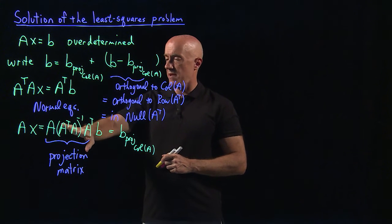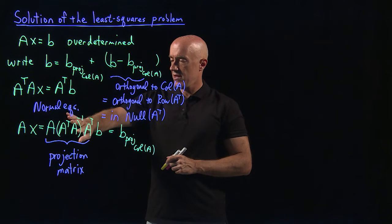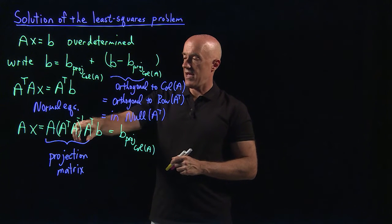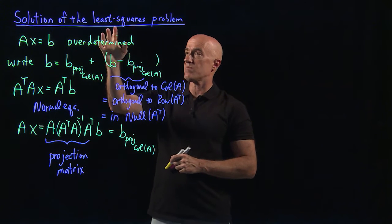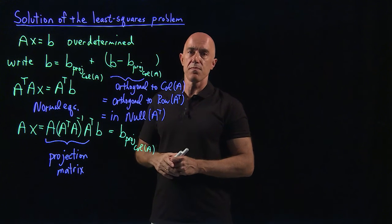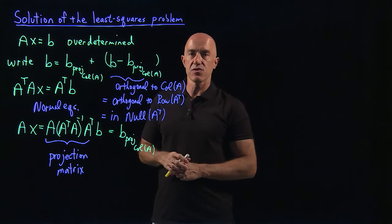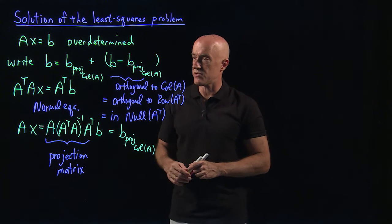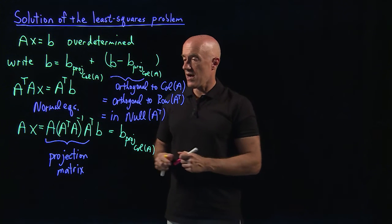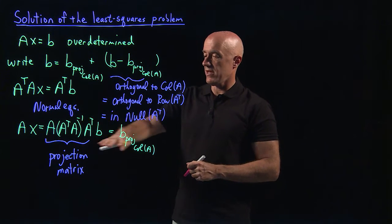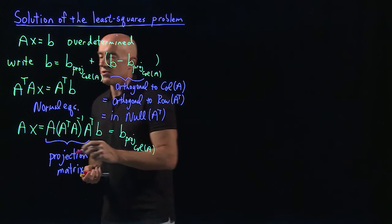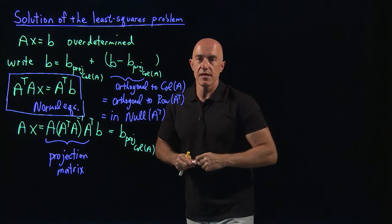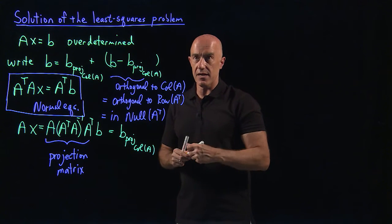Note that A is not an invertible matrix — it's not even a square matrix. In the least squares problem, A is an n by 2 matrix. However, A transpose A is a square, invertible matrix, and this projection matrix projects b onto the column space of A. This is just a linear algebra aside. The actual key result is the normal equations, which is what we're going to use to find the least squares line.